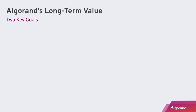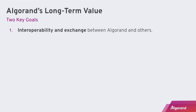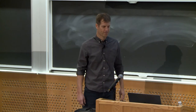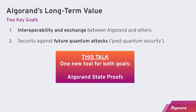In this talk, I'll be telling you about some of the work we've been doing at Algorand for the last year in the crypto research and engineering groups on state proofs. When we think about how we can make Algorand valuable for the long term, there are a lot of important problems and goals, but this will be about two of them. One is to make Algorand interoperable and able to exchange value with others. The second is ensuring post-quantum security. Our new tool for addressing both is called Algorand state proofs.